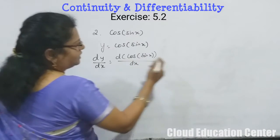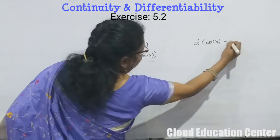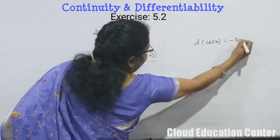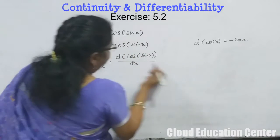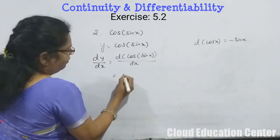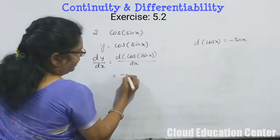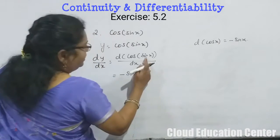Now we will differentiate the cos x. We know already the formula: d(cos x)/dx is nothing but -sin x. But here we have x, that's why we are writing it. But in this case we have sin x inside. So while writing, we will write minus sin, instead of x, we will write sin x.